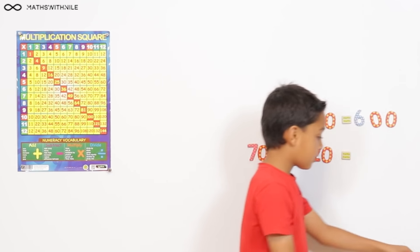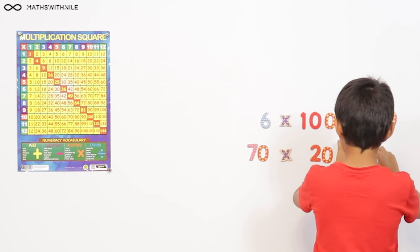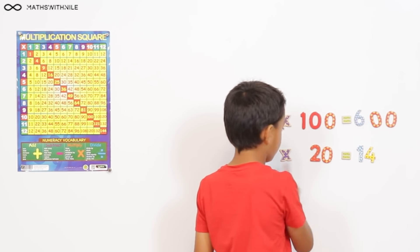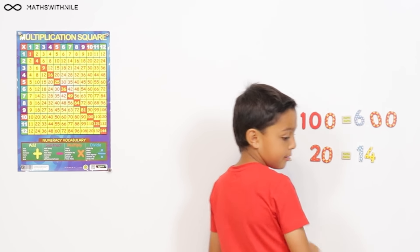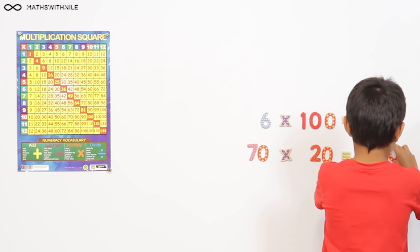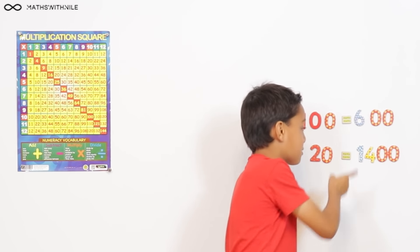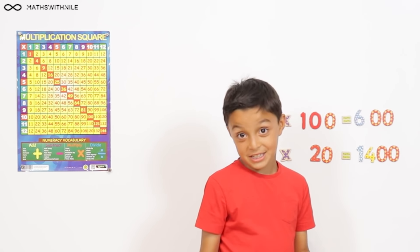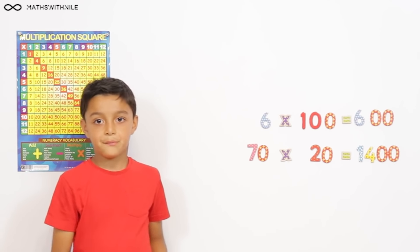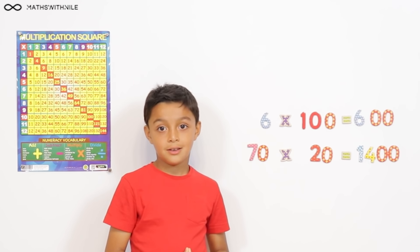Very good, so what is 7 times 2? 14. So let's put the 14, and how many zeros did you say you were going to add? The two zeros that are here. Yes. So, let me get my two zeros. And the answer is 1,400. Very good. So 70 times 20 equals 1,400.